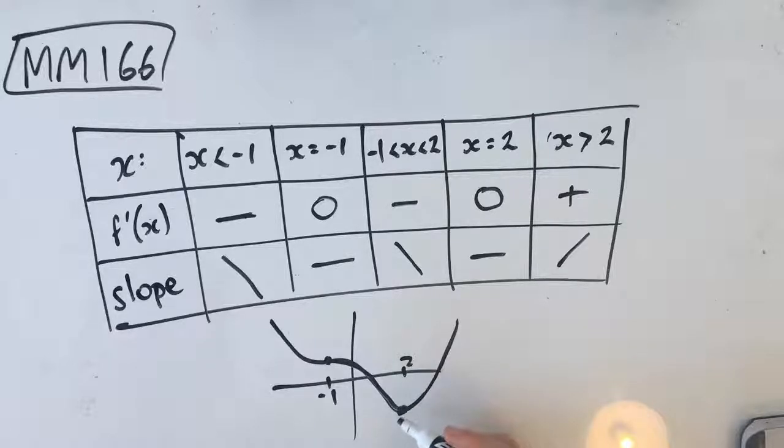B, the graph has a local minimum point where x equals negative 1. Is this a minimum point? No, it's a stationary point. So B is out. That's wrong.